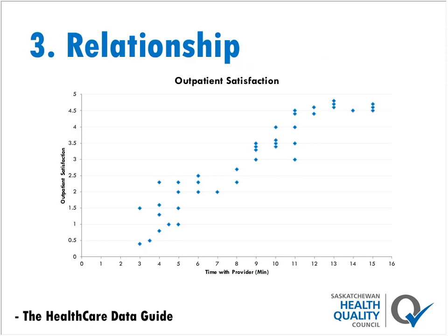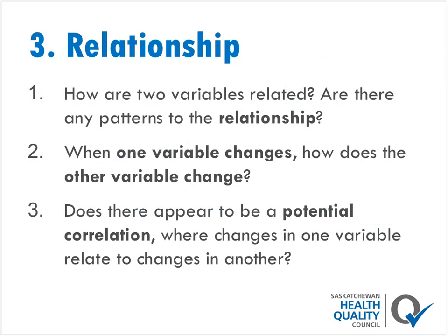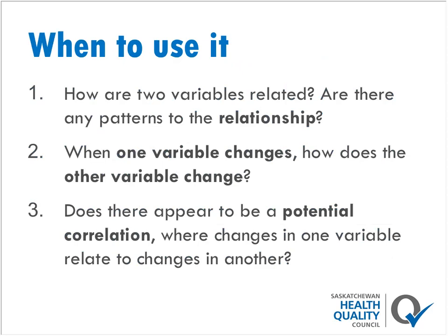The third type is a relationship chart, which shows the relationship between different characteristics. Examples include a response plot, line plot, or scatter plot. These provide a visual display of the relationship between two variables, showing how one variable increases or decreases as another changes. They are used to investigate whether one variable is influenced by another, answering questions such as: How are two variables related? Are there any patterns? When one variable changes, how does the other change? Does there appear to be a potential correlation?